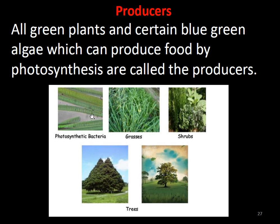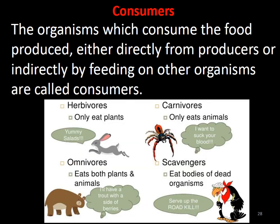Now we shall study producers and consumers. All green plants and certain blue-green algae which can produce food by photosynthesis are called producers. There are three types of consumers: primary consumers, secondary consumers, and tertiary consumers.